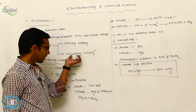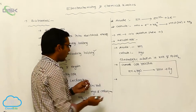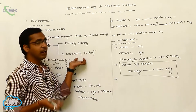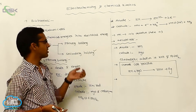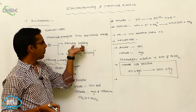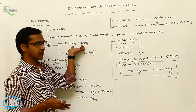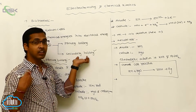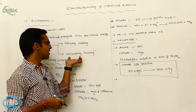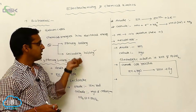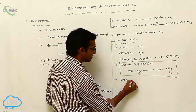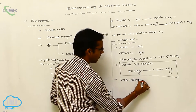The second type is the secondary battery. Secondary batteries, after a period of use, can be discharged and recharged again. Unlike primary batteries which cannot be reused after discharge, secondary batteries can be reused through the discharging and charging process. The best example is the lead storage battery.